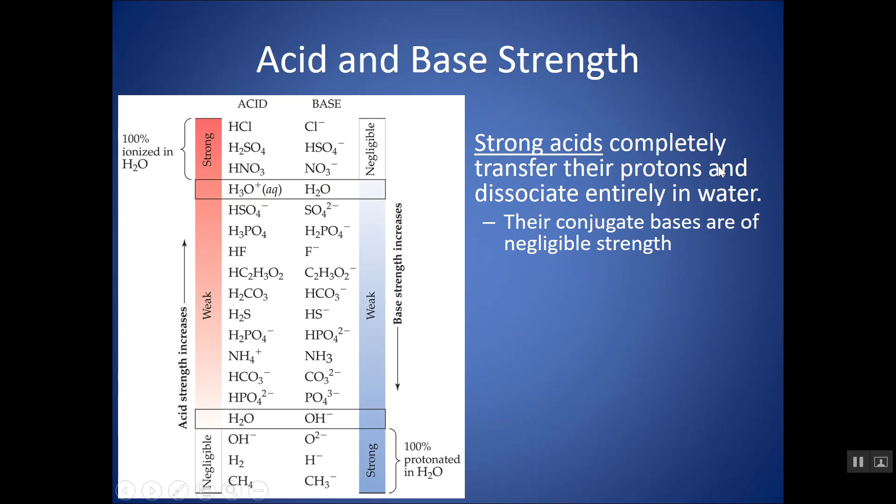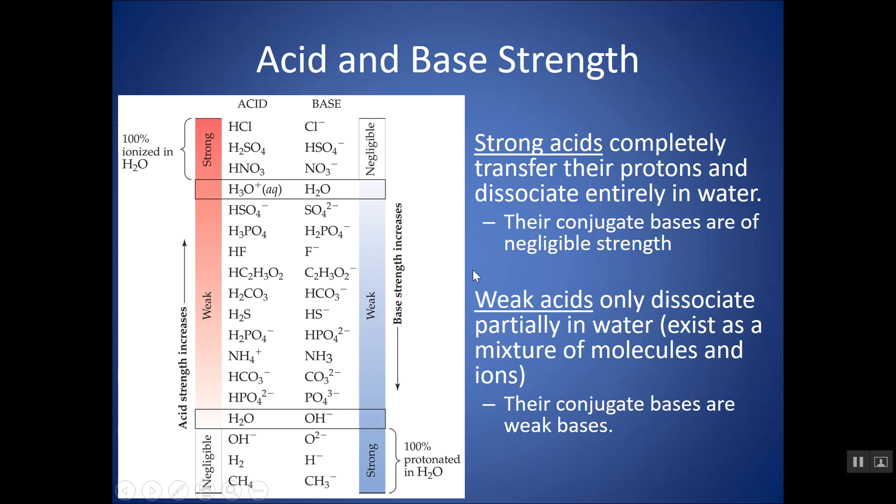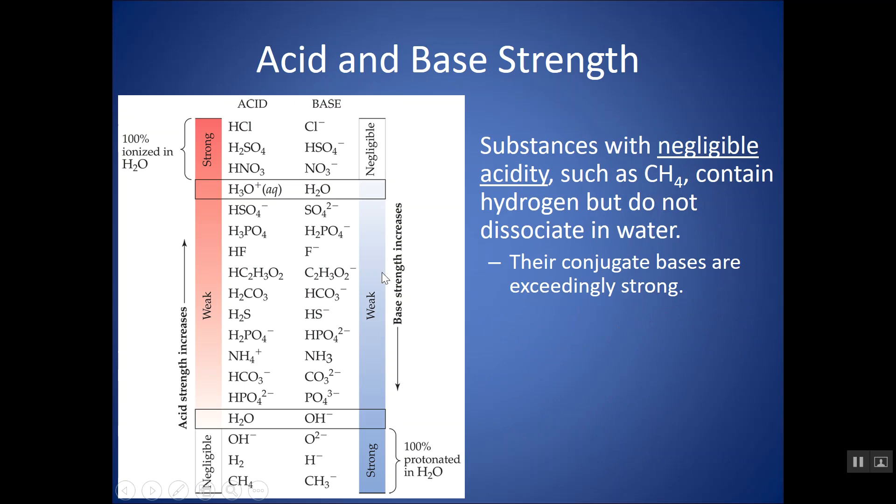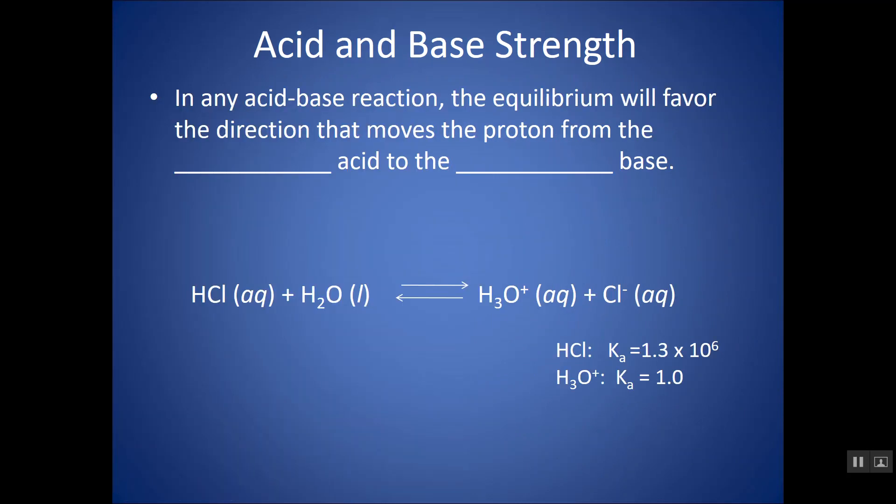Strong acids completely transfer their protons and dissociate entirely. Their conjugate bases are of negligible strength. So HCl is a strong acid, its conjugate base Cl minus is of negligible strength. If you have a weak acid, it will have a conjugate base that is also weak. So weak acids have conjugates that are weak bases, weak bases have conjugates that are weak acids. And if you have a strong base, you're going to have a conjugate acid that's of negligible strength.